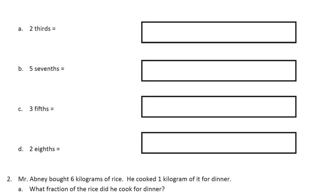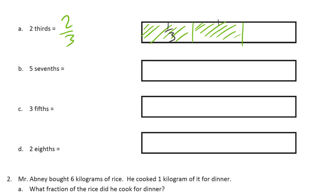Here's the first one: two-thirds. So that means we need thirds. Two-thirds — and that's about as good as I can get it. Two-thirds need to be shaded in, so I'll shade that one. And that's two of them — two-thirds. And I have to label each of these as one-third.